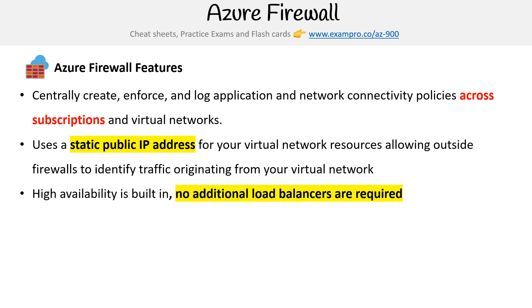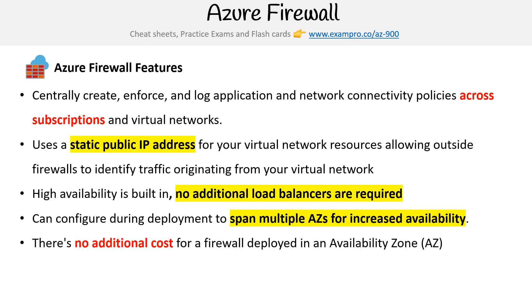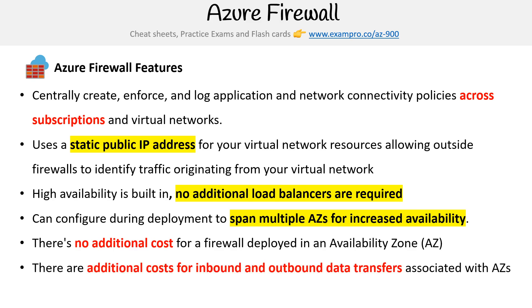High availability is built in at no additional cost, so you don't have to create load balancers and do all that work yourself. You can configure it during deployment to span multiple availability zones for high availability. There's no additional cost for a firewall deployed in an availability zone, but there is an additional cost for inbound and outbound data transfers associated with availability zones, which is typical.